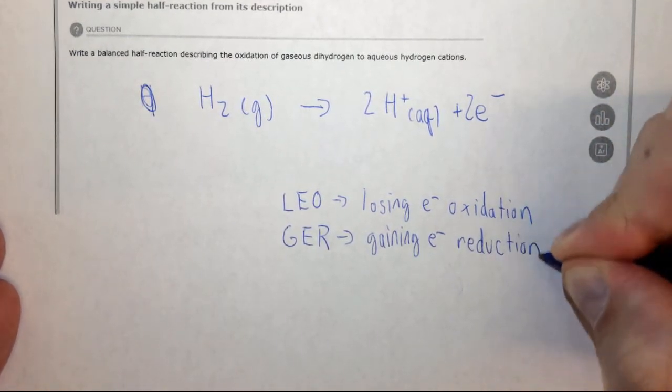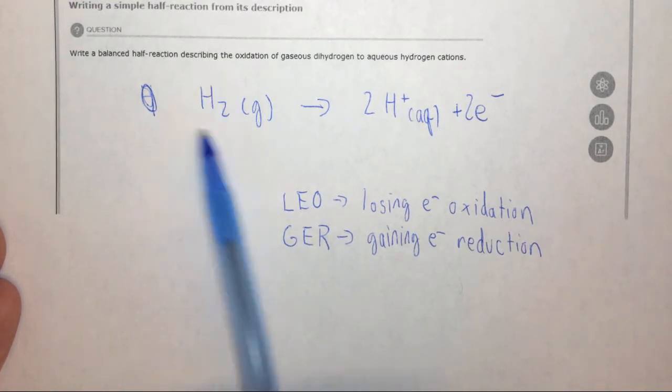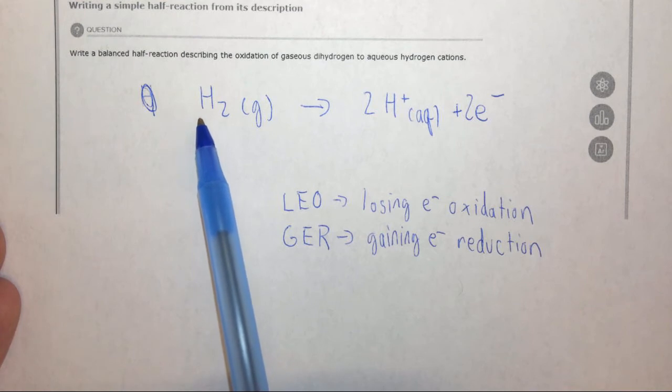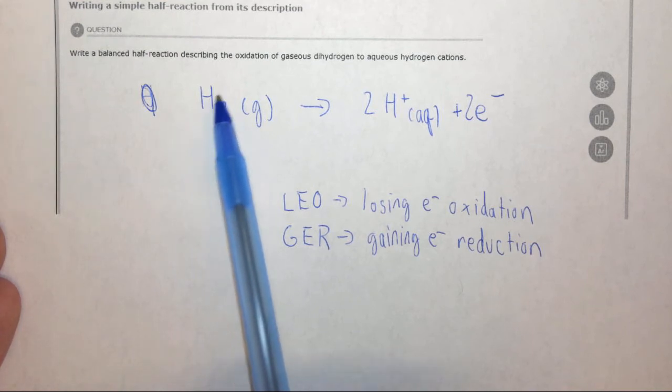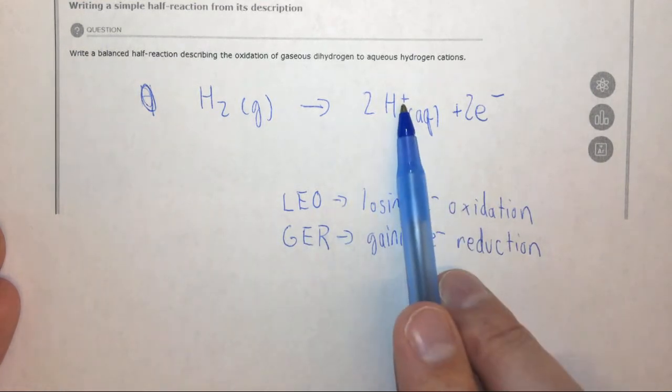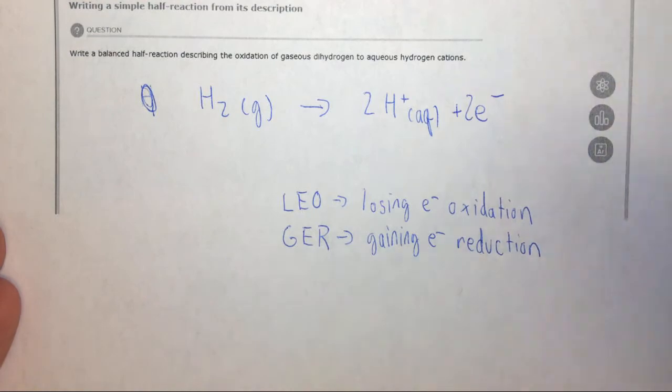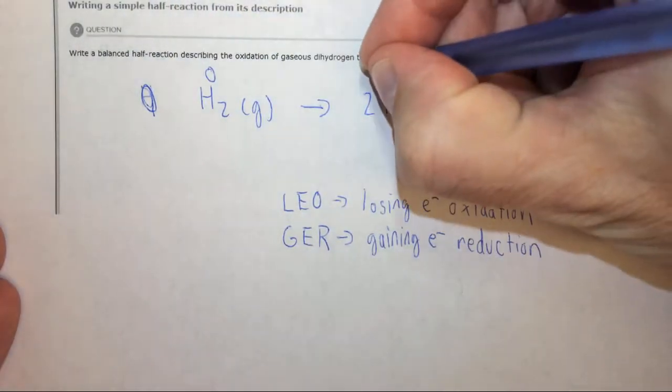So here hydrogen has undergone oxidation because it was originally neutrally charged, and any element's oxidation state is zero. And here it has an oxidation state of plus one. So it went from zero to plus one. Here it's zero, here it's plus one.